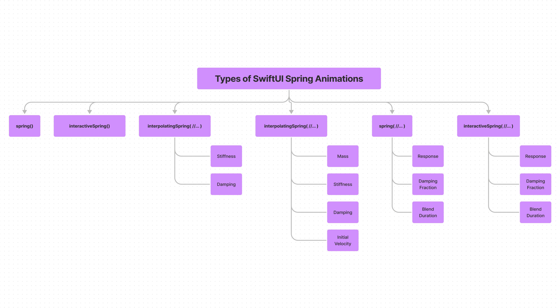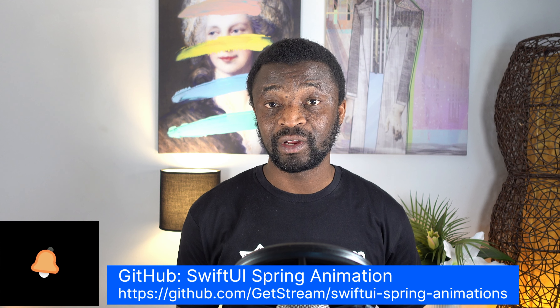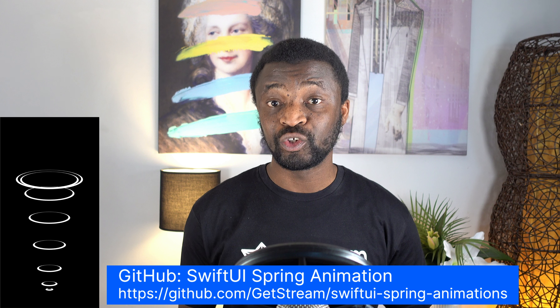So in this tutorial, you learned about all the various kinds of spring animations available in SwiftUI, as well as their parameters such as mass, stiffness, damping, damping fraction, response, and initial velocity. The project is hosted on GitHub, so I encourage you to download it and explore all the various examples of spring animations we used for this project. And thanks for watching.